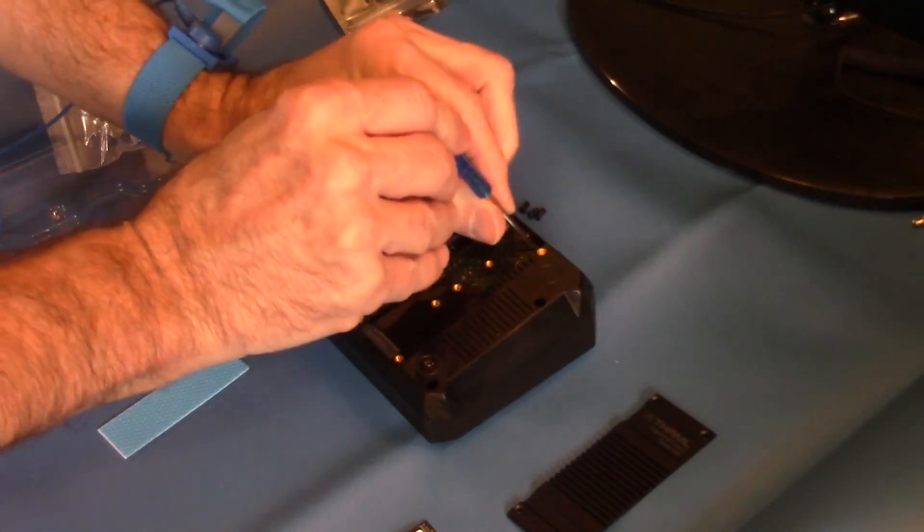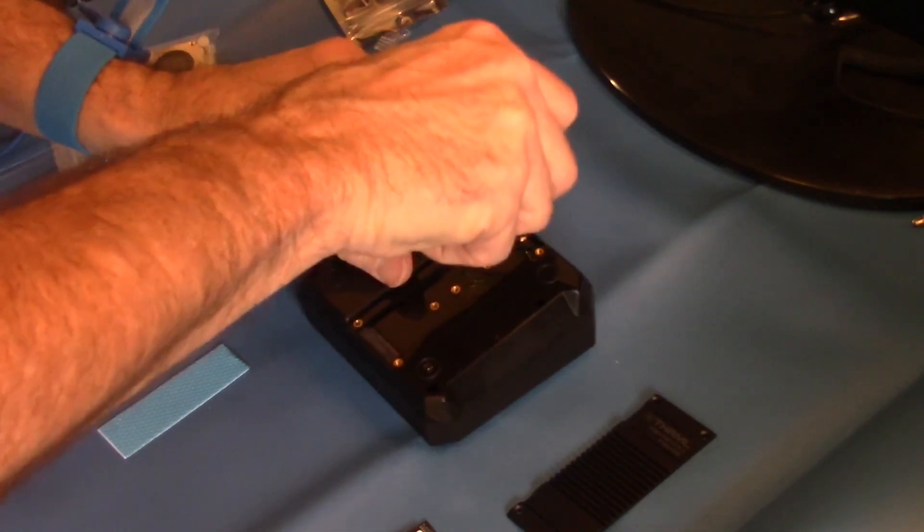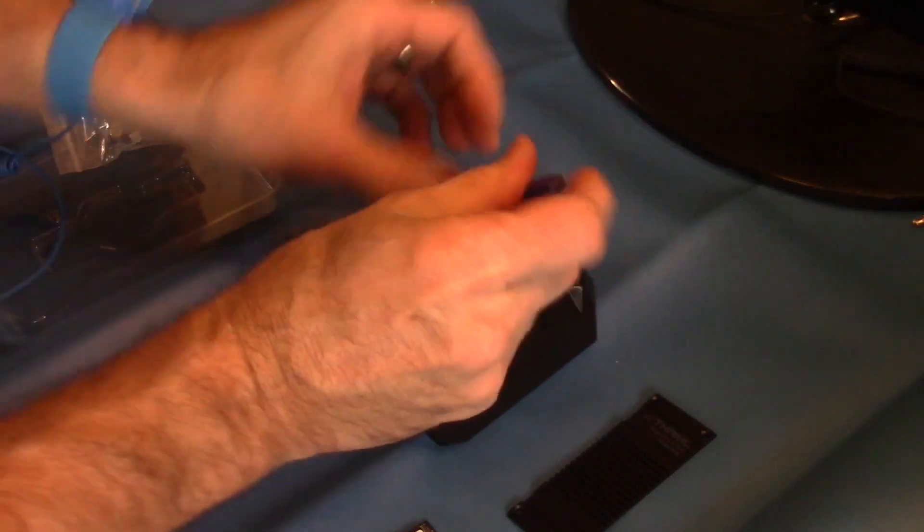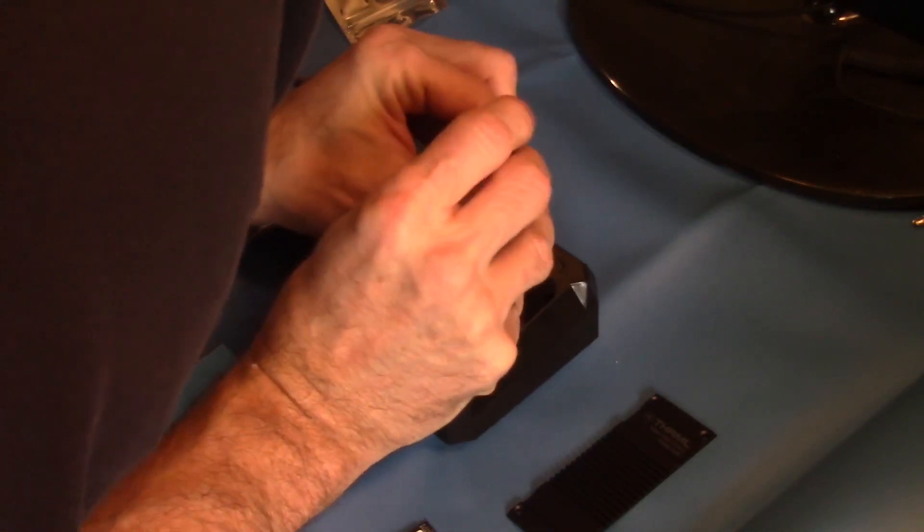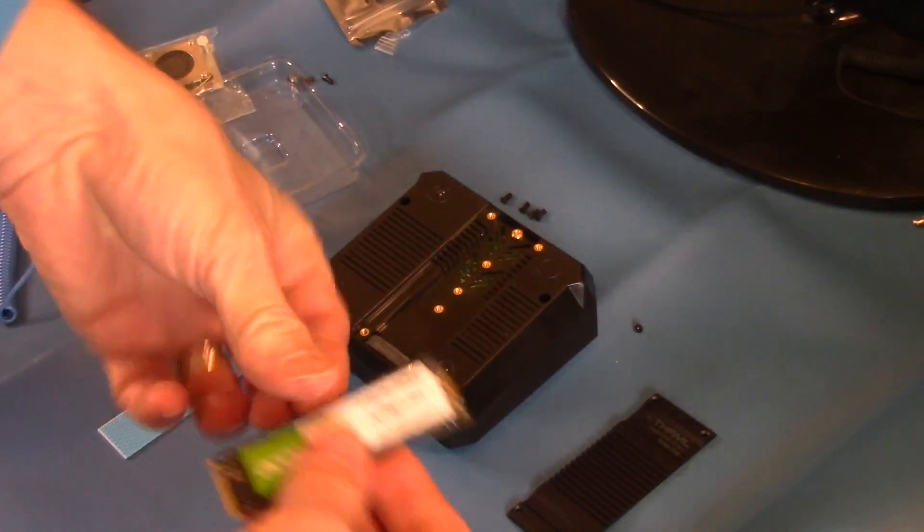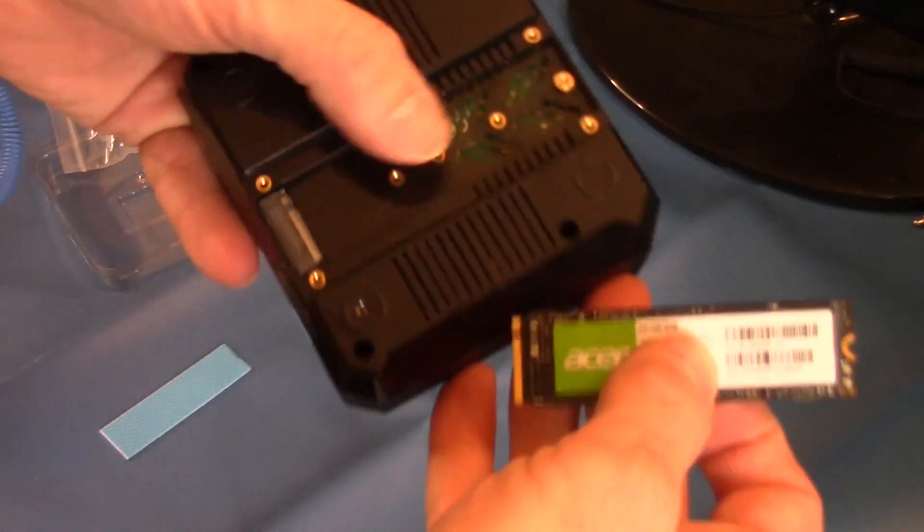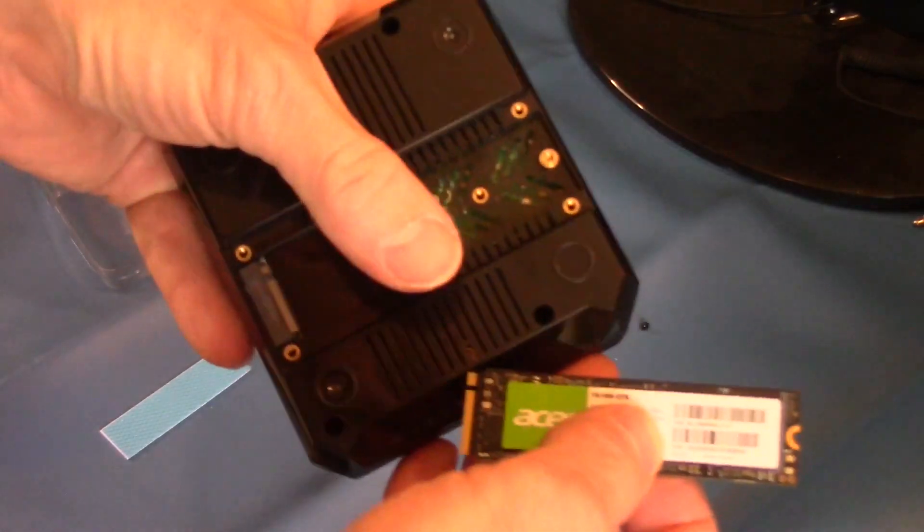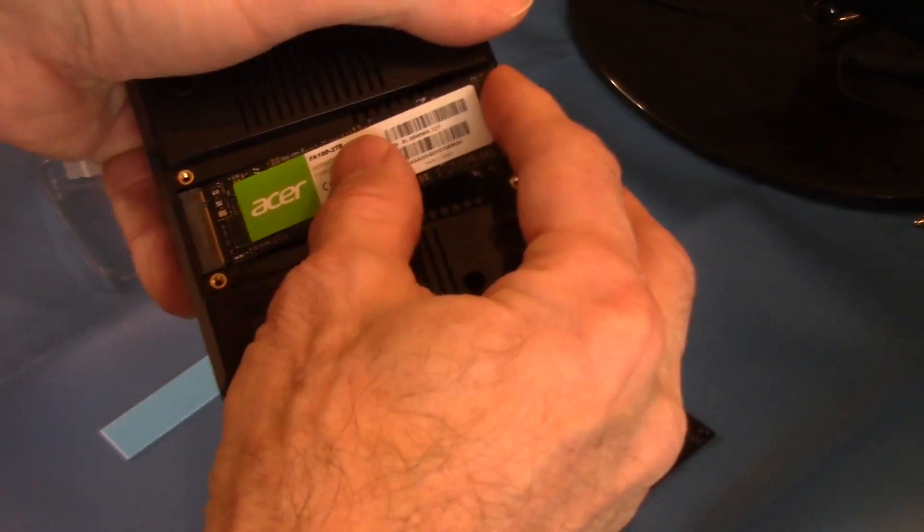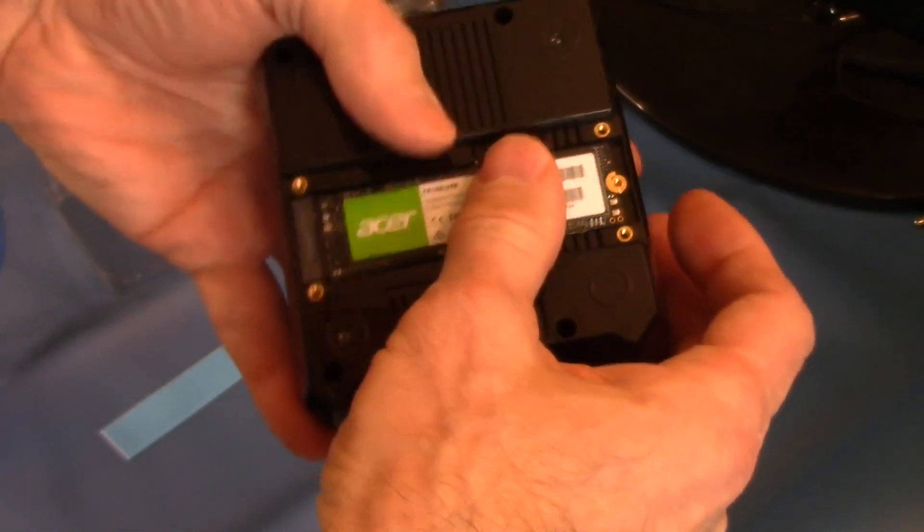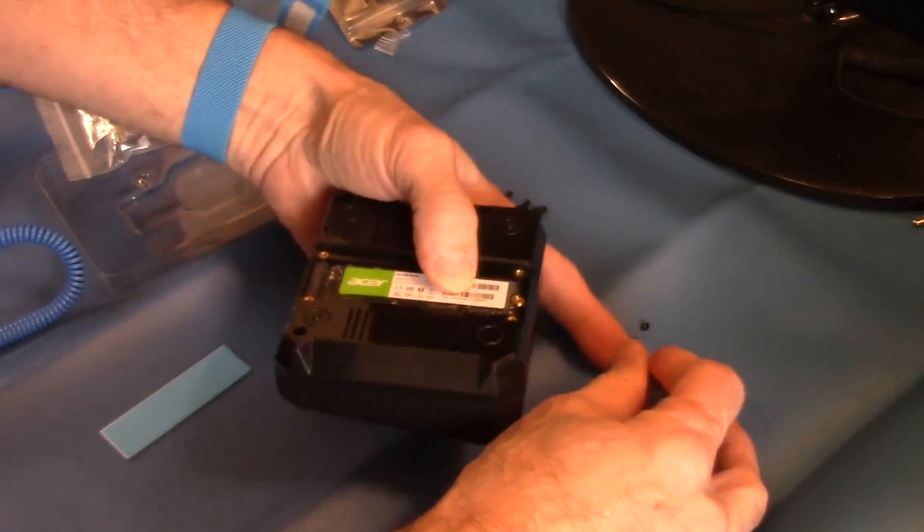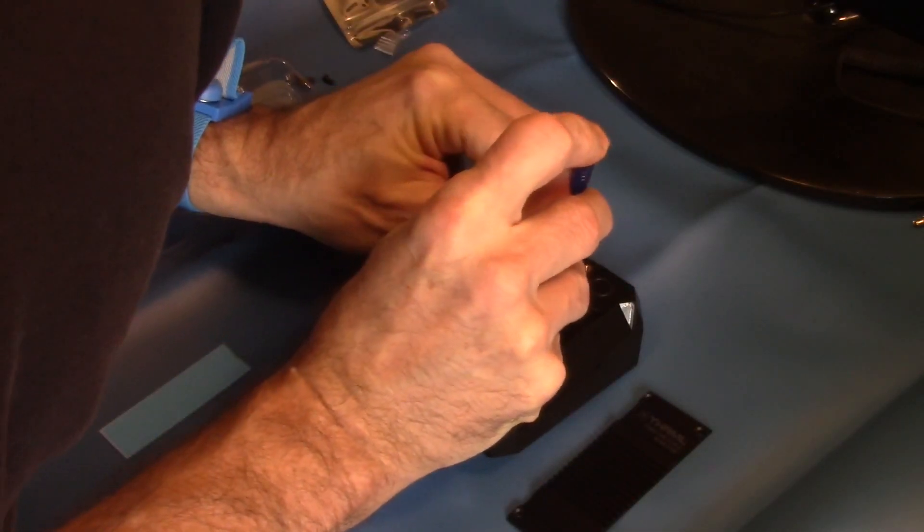Remove the NVMe securing screw. Then push the NVMe card into the connector at an angle until it's all the way in. Now put the screw in to secure the NVMe board to the case.